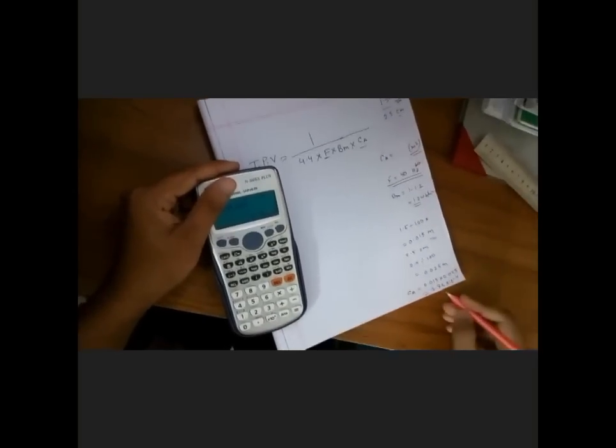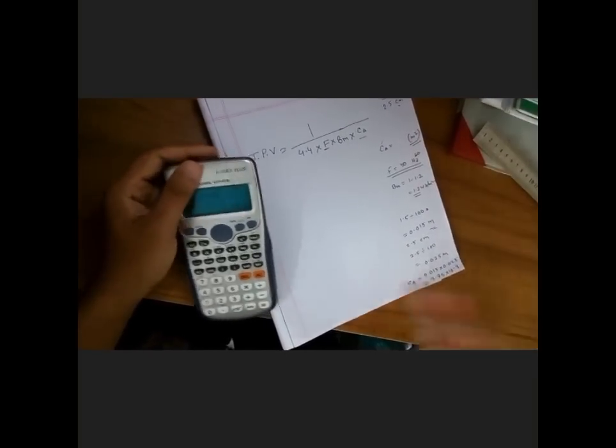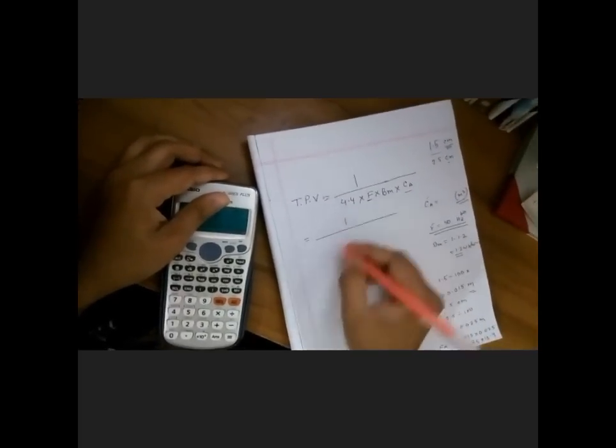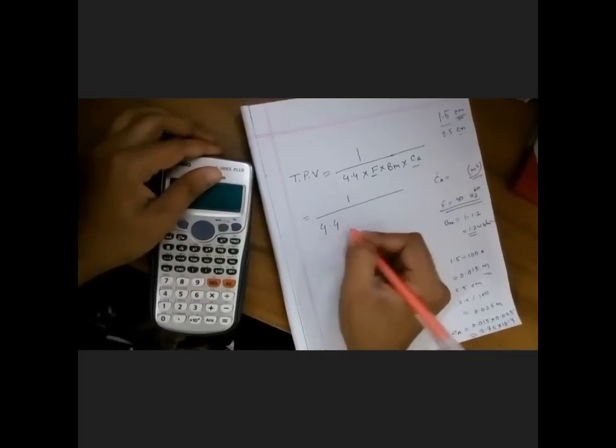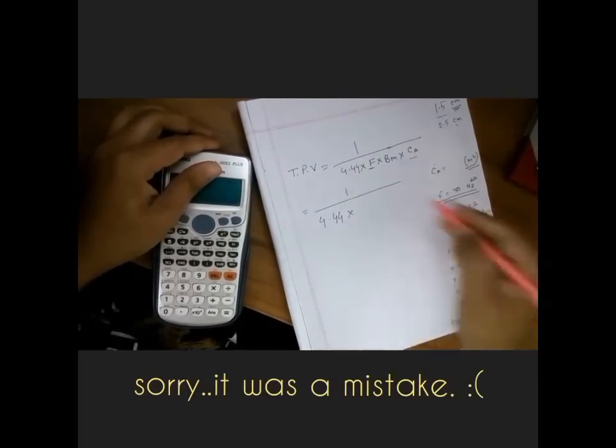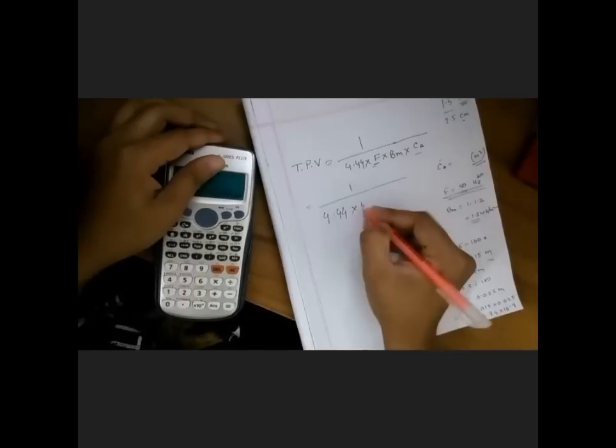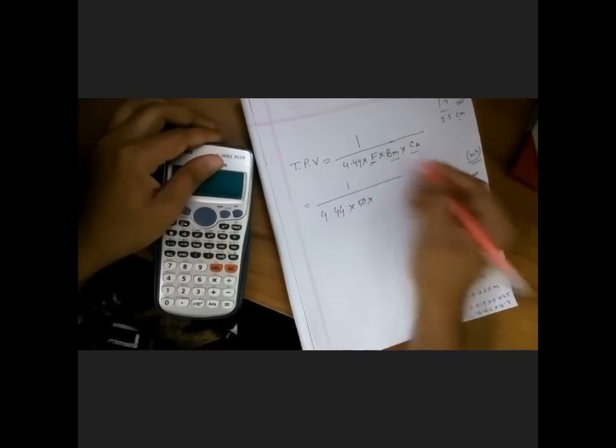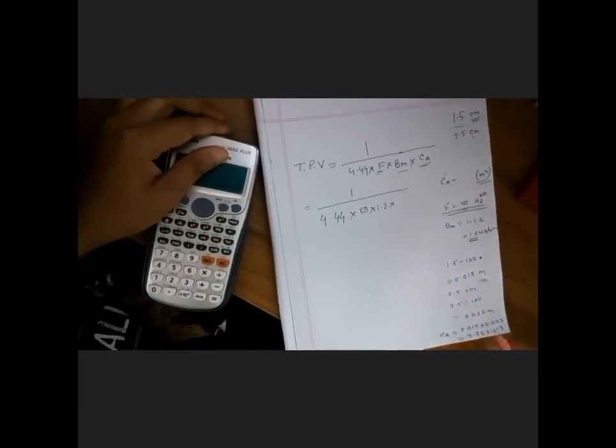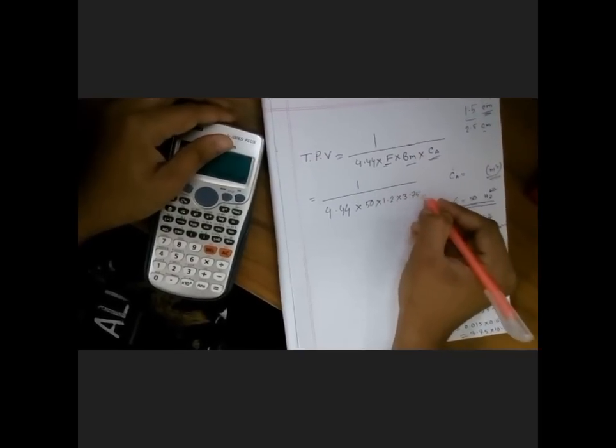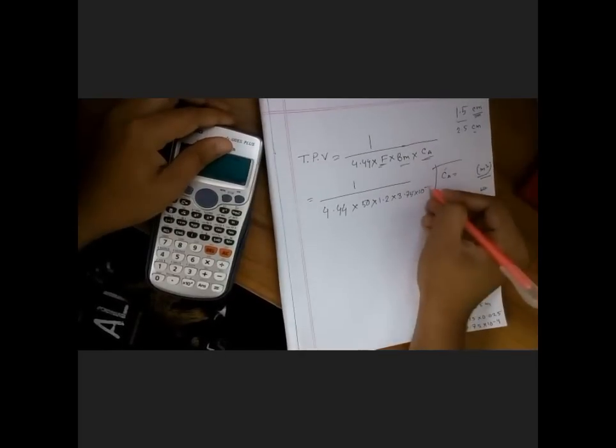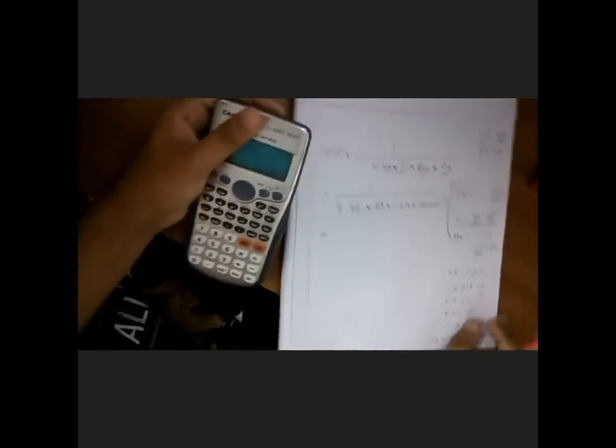So let's take the value here: 1 by 4.4, oh it's double 4, sorry, into the frequency here is 50 I am taking, into magnetic flux 1.2, into core area, into core area here 3.75 into 10 to the power minus 4. Let's calculate.